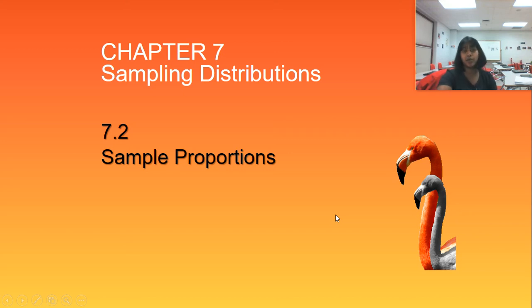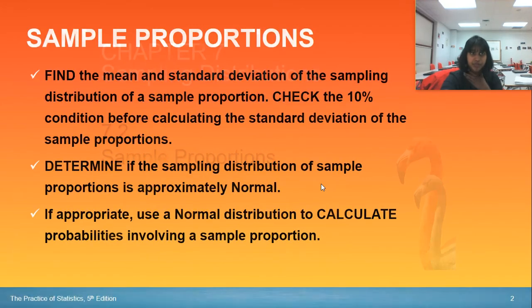Hi, and welcome to Chapter 7.2, where we are talking about sample proportions. In this topic, you should be able to find the mean and standard deviation of the sampling distribution of a sample proportion, or what you call p-hat.